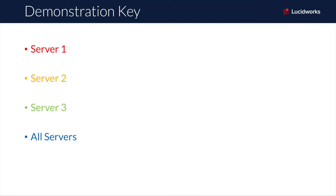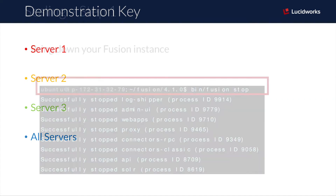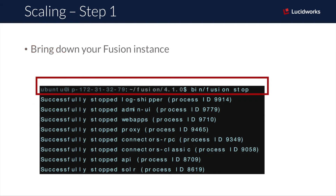Now I'll go through the process of actually building out this three node Fusion cluster. Throughout the demonstration, I use color to distinguish between the three servers in my cluster, and whenever an instruction applies to all of the servers in the cluster, I highlight it in blue. The very first step is to bring down the current Fusion instance by issuing the bin/fusion stop command.